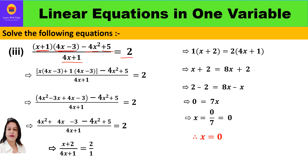First we will solve the two brackets — binomial times binomial — and find the product, then simplify. So x multiplied by (4x minus 3) plus 1 in bracket (4x minus 3), minus 4x² plus 5 as it is, upon (4x plus 1) equal to 2. Opening the brackets: x times 4x, then x times minus 3 gives 4x² minus 3x.